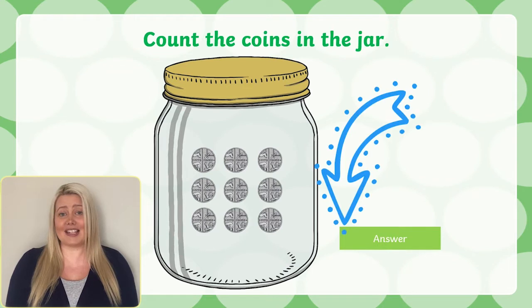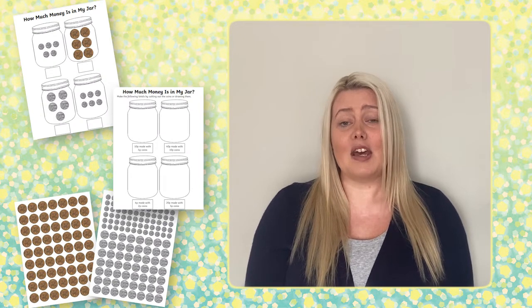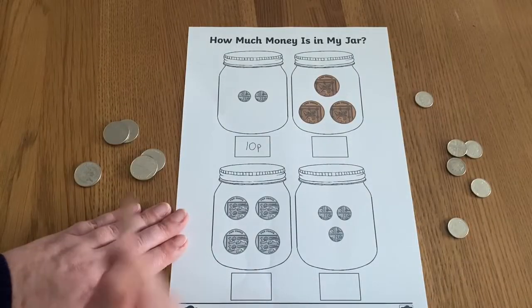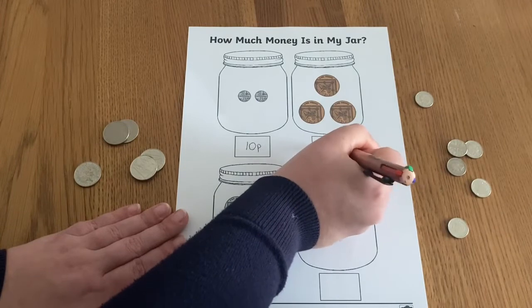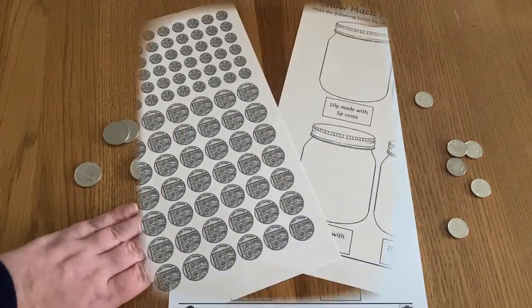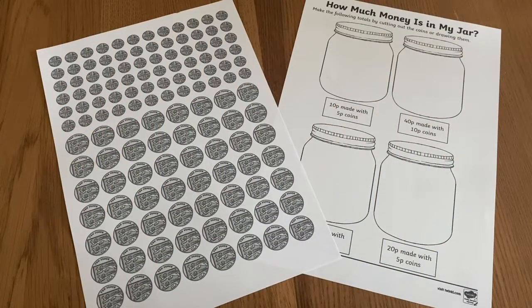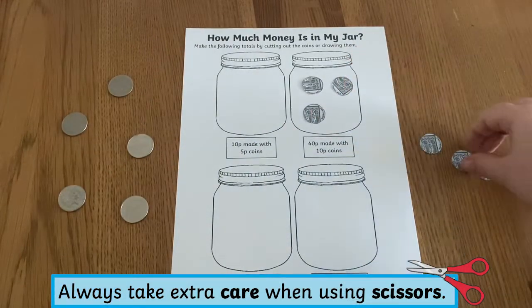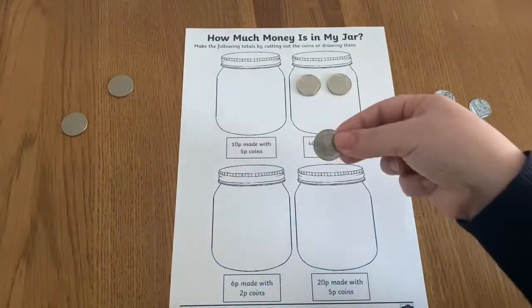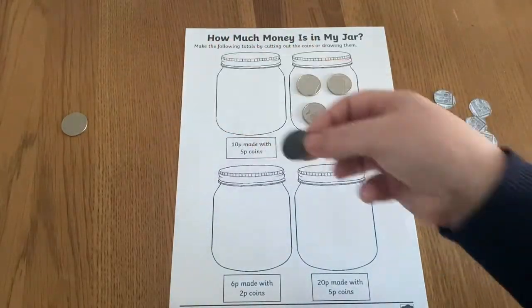Easily check if they were correct by pressing the interactive answer button on the PowerPoint. Once children are confident, move on by asking them to complete these Money In The Jar maths worksheets. Here children can count in twos, fives or tens to find the total in the jar and write it in the space provided. Or start with the total and ask children to cut out the correct coins to make that value. If you'd rather, children could use toy coins or real coins to make the totals instead.